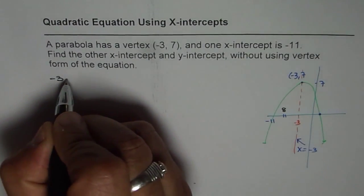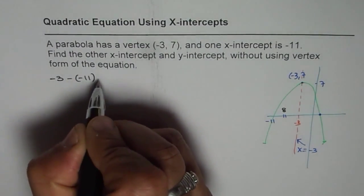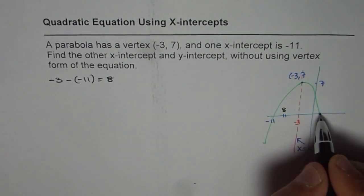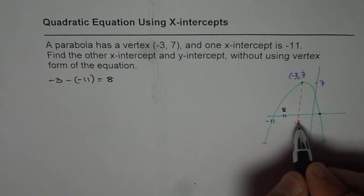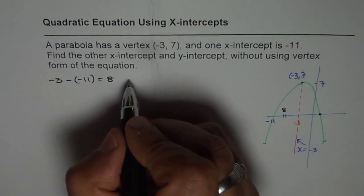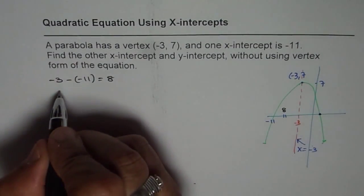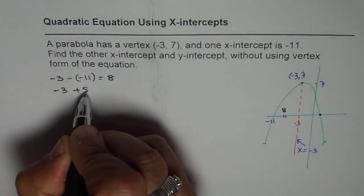-3 minus -11, so we can write -3 minus of -11, which is 8. Therefore, distance between a point should be also 8 more than -3, correct? So if I add 8 to -3, what do I get?